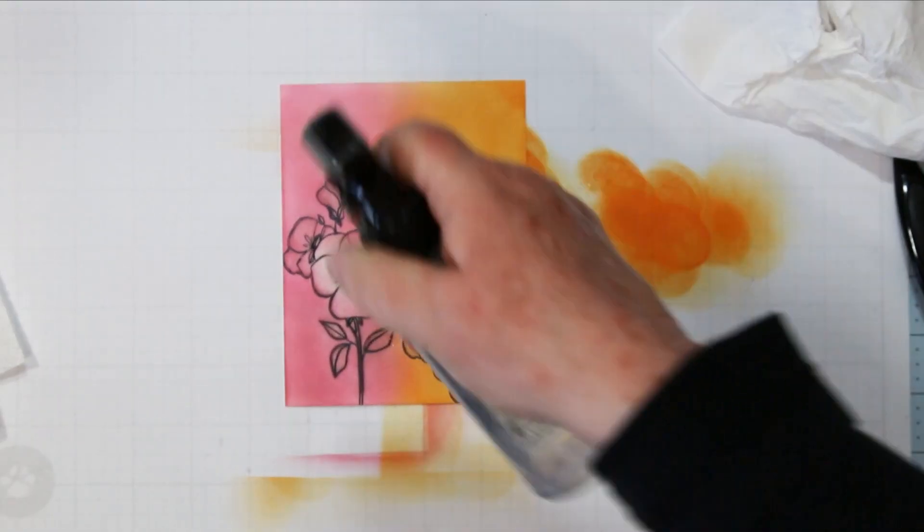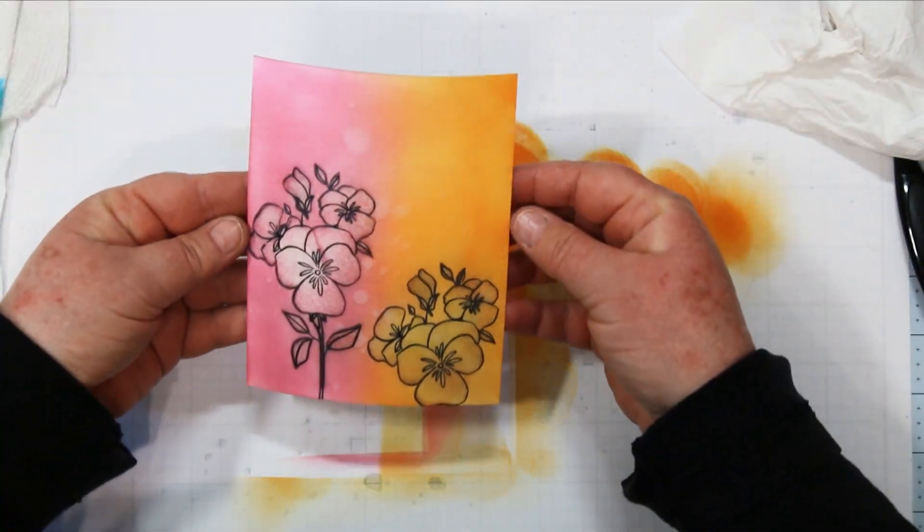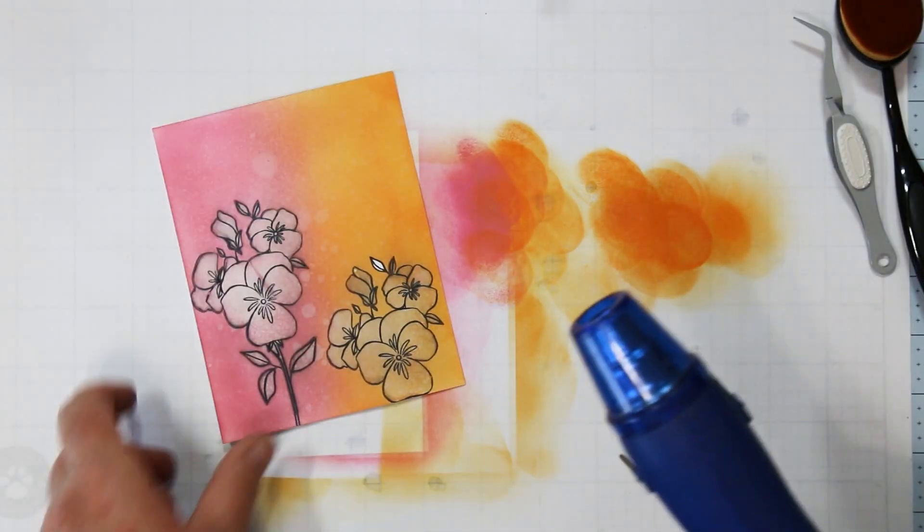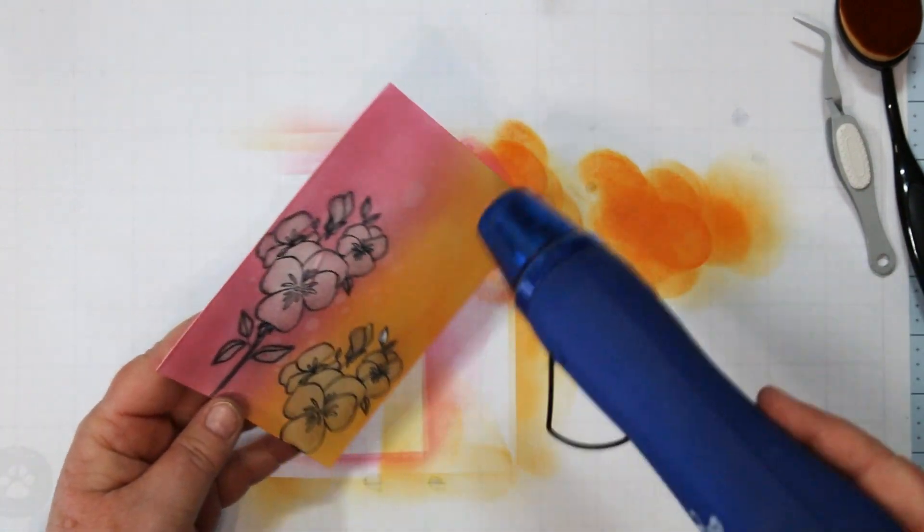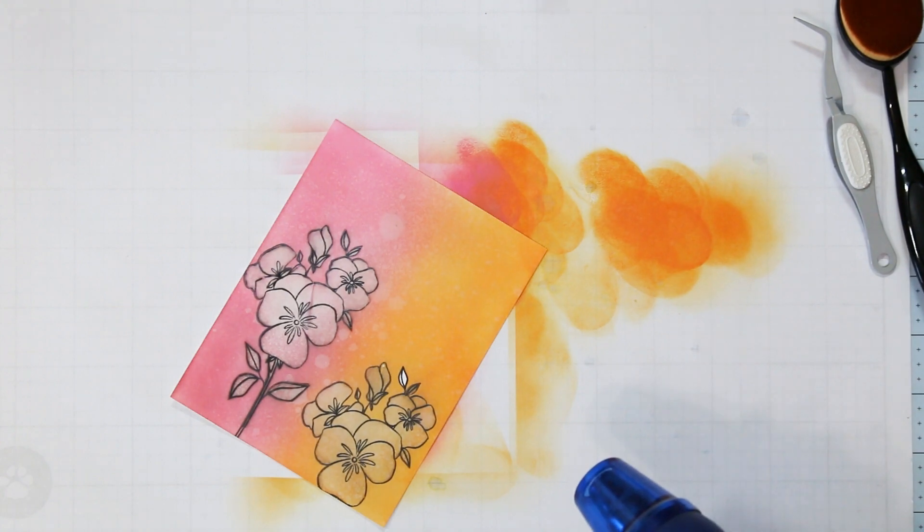Next we're going to spritz. And this is just straight water. Spritzing it on there and then using a piece of paper towel to pick it up gives it a nice effect. And now I'm going to dry it before I do the next step. I'm just using my heat tool and drying it out.